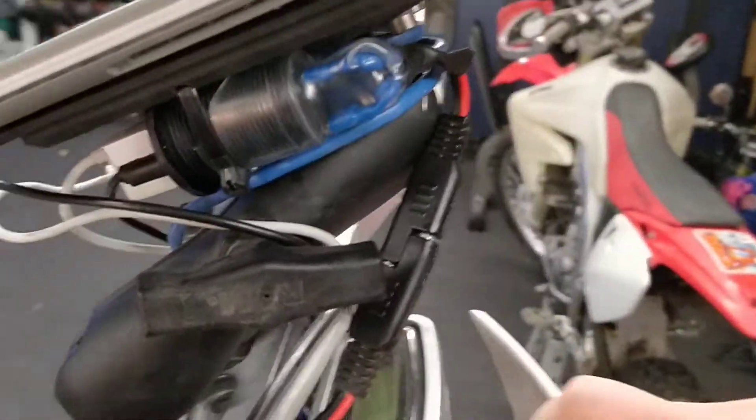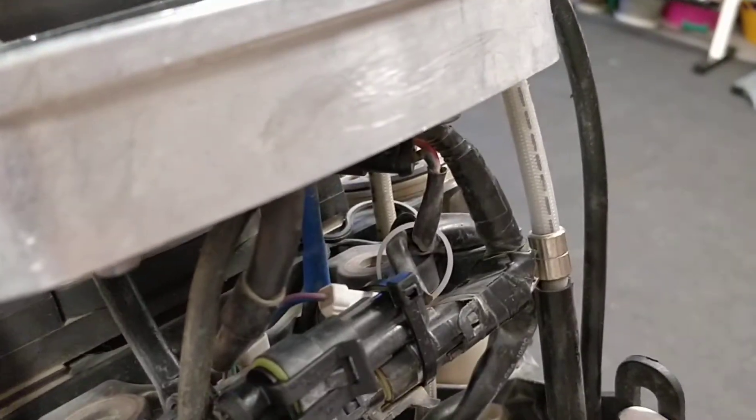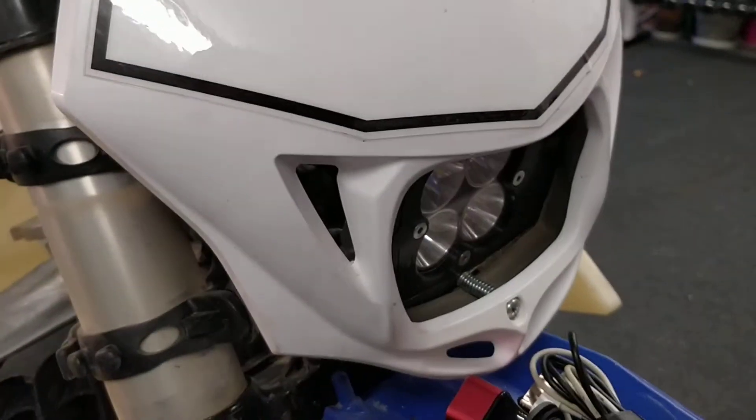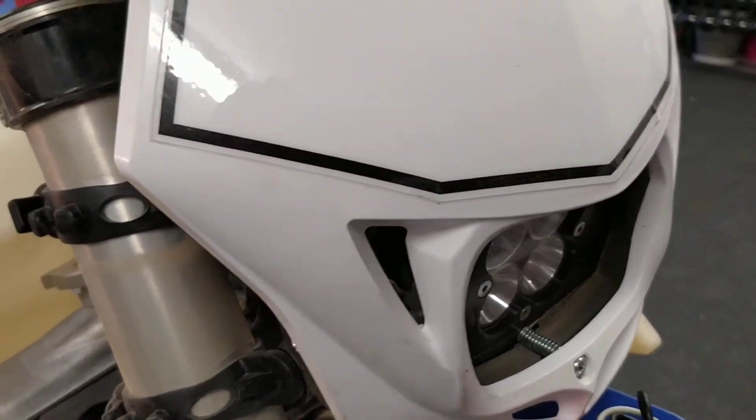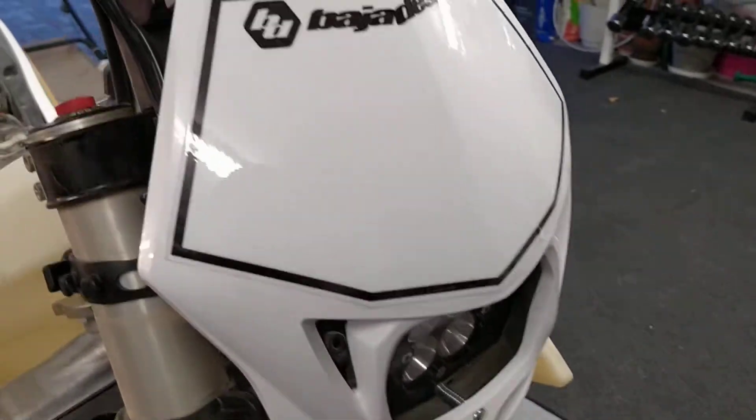So the way that I set this up is I have these Euro connectors. You can see behind the headlight here, and this is a Baja Designs, kind of universal, but it's one of their Squadron race lights. And this just worked really well. It's a nice tidy little design.